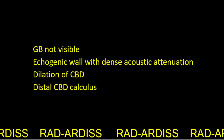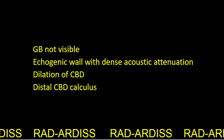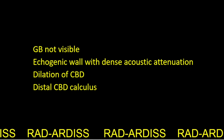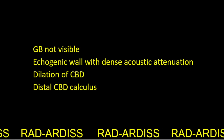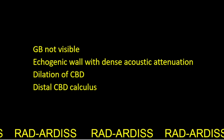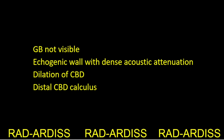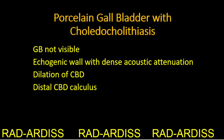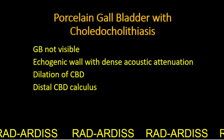To summarize: the gallbladder is not visible; there is an echogenic wall of the gallbladder with dense acoustic attenuation distally. The common bile duct is dilated, and there is a calculus distally inside the common bile duct. This case is therefore a case of porcelain gallbladder with choledocholithiasis.